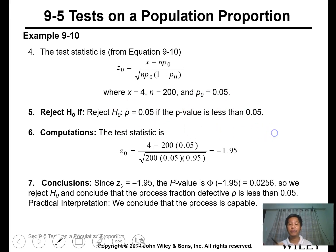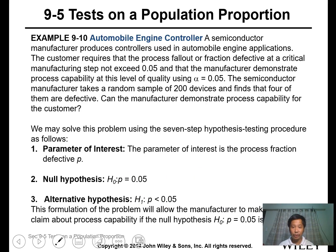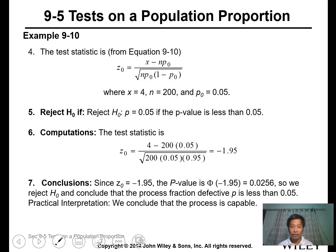We'll reject if the p-value is less than 0.05. Calculating the z-value and determining the probability, this is one-sided, P less than, so the probability is on the left. This gives 0.0256. Since 0.0256 is less than 0.05, we reject the null hypothesis and conclude that the process fraction defective P is less than 0.05. We conclude that the process is capable.